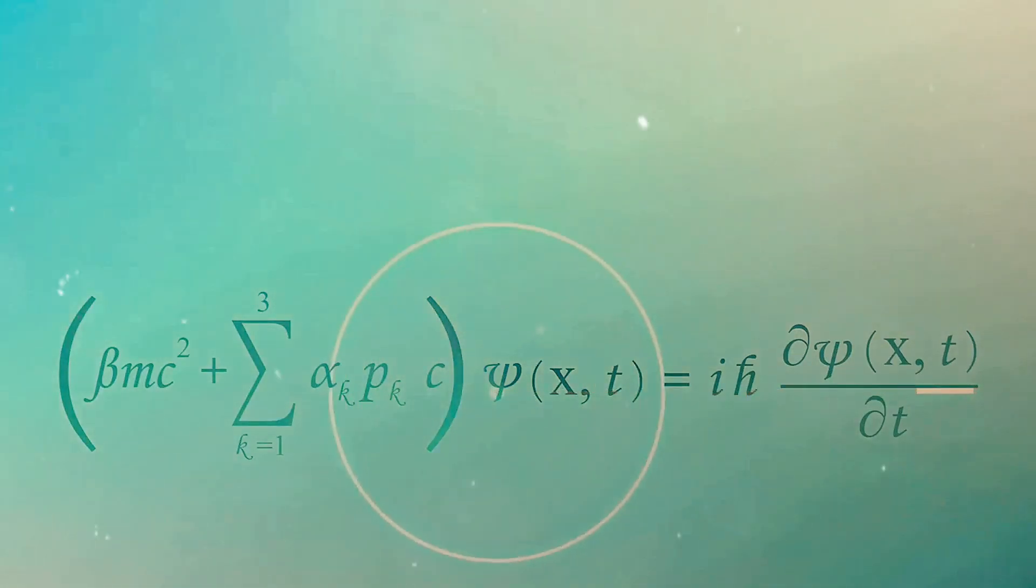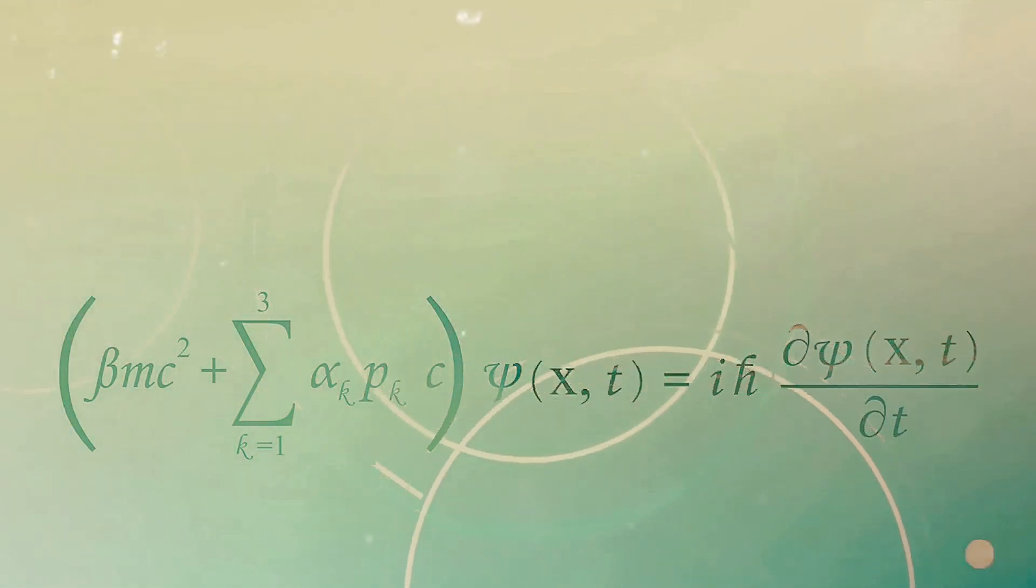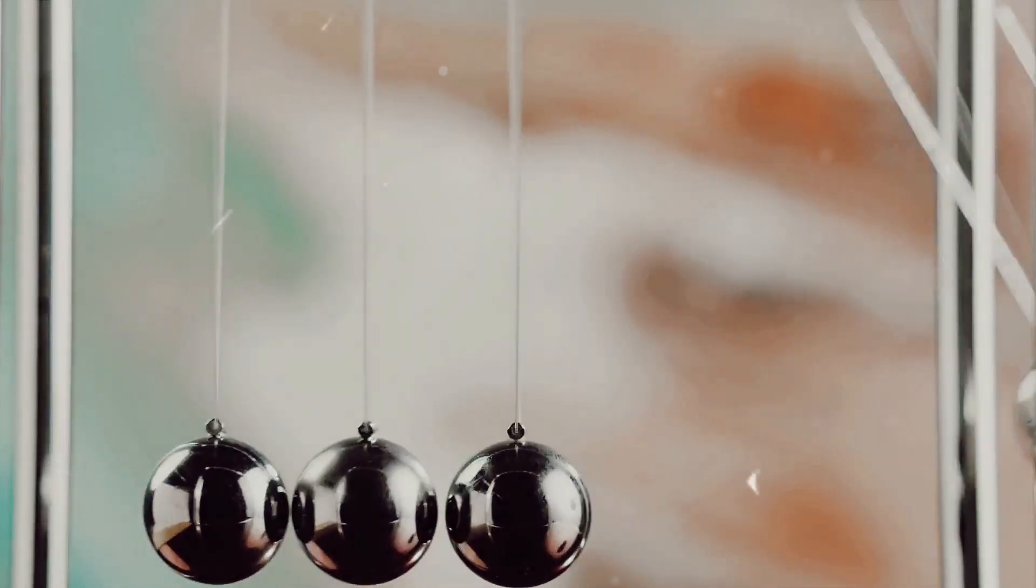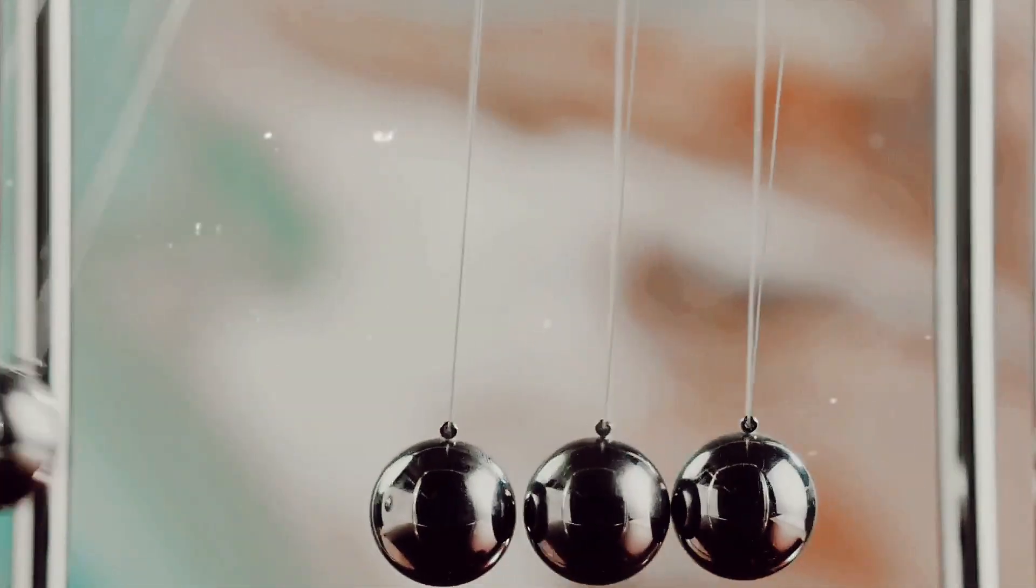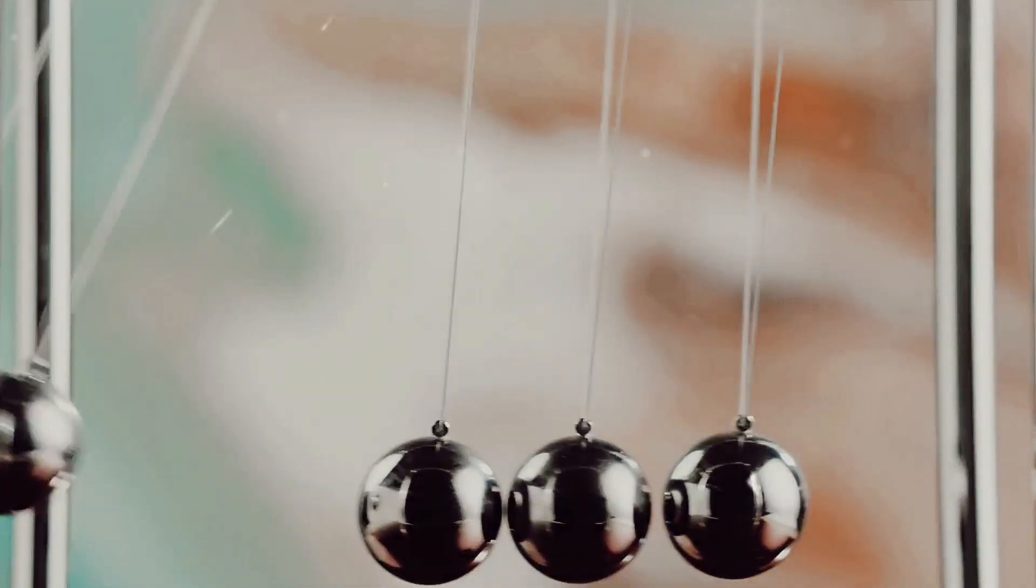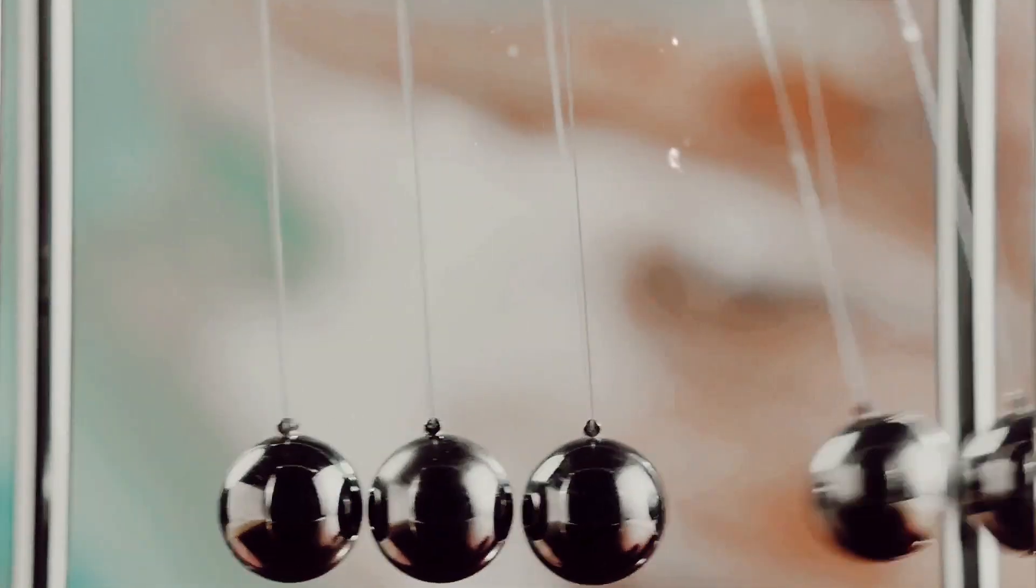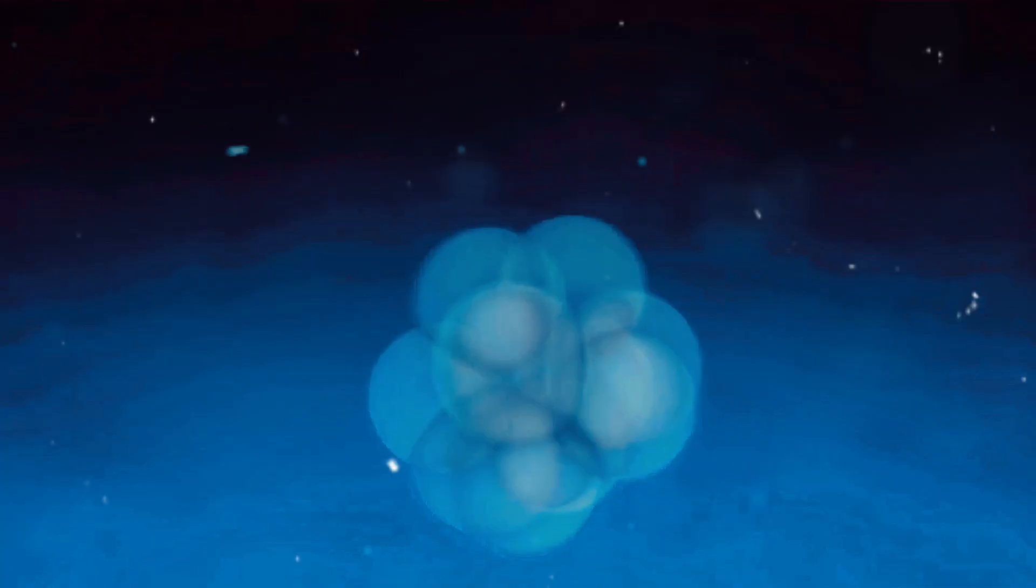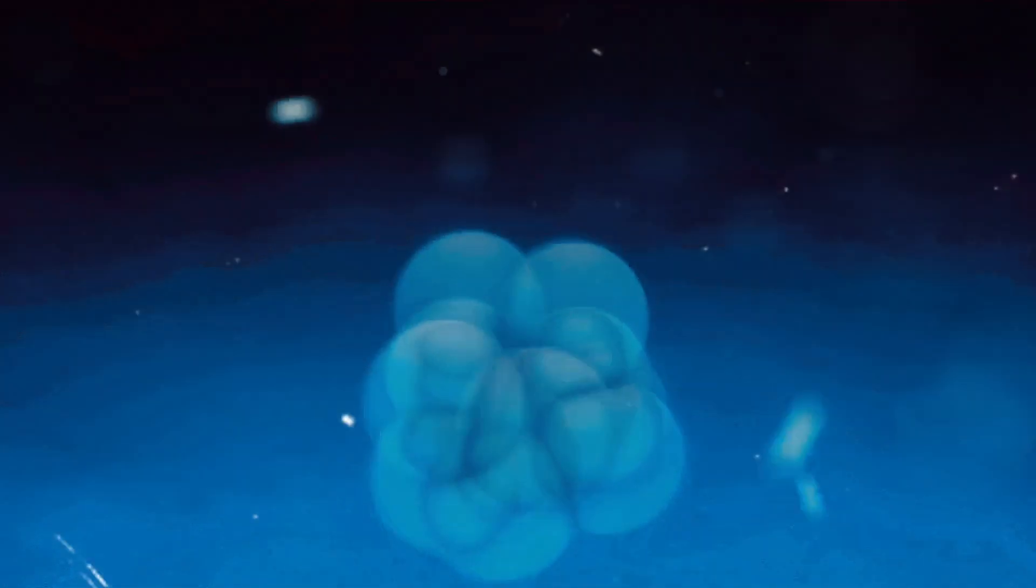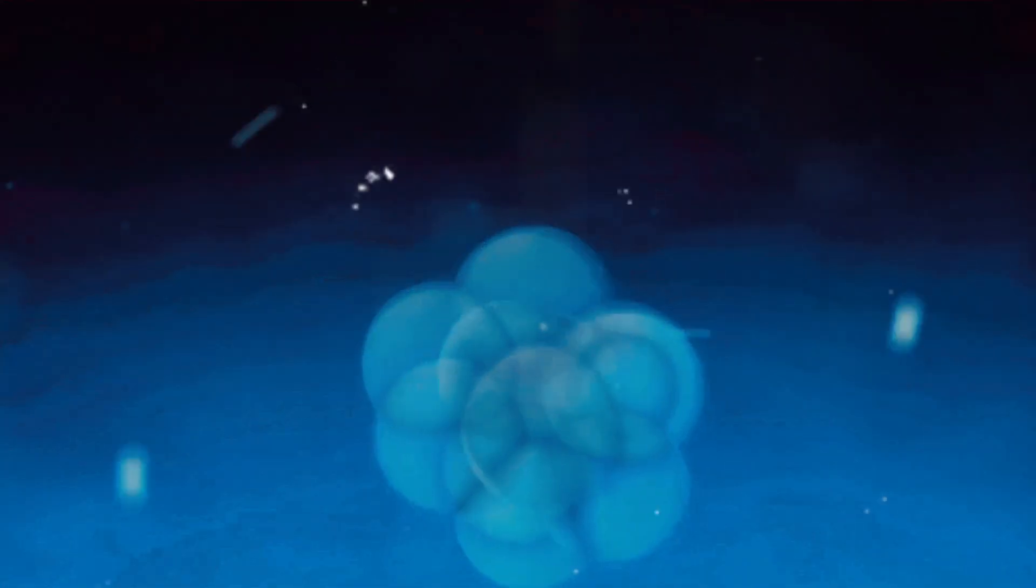Now you might be thinking, with all these electrons zipping about, surely they'd bump into each other from time to time. Oddly enough, they don't. This is where the Pauli exclusion principle comes into play. Named after the physicist Wolfgang Pauli, this principle is a fundamental law of quantum mechanics. It states that no two electrons in the same atom can have identical quantum states. In simpler terms, no two electrons can occupy the same place at the same time.